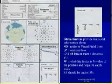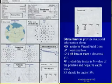Reliability factor is a percentage value of the positive and negative catch trials. It's called RF and should be under 15% for a test to be reliable.